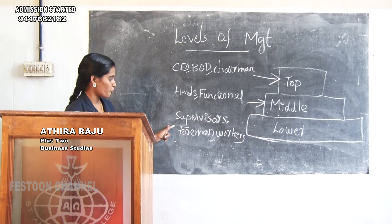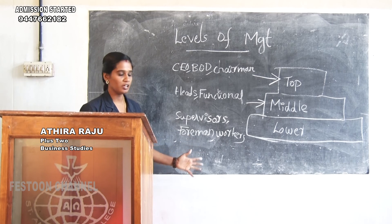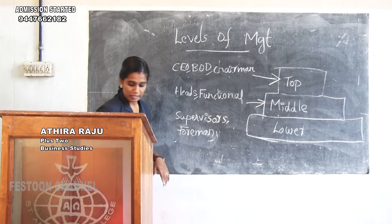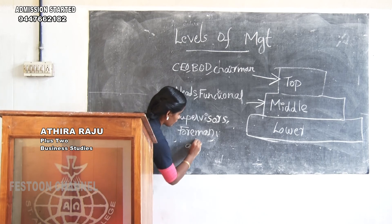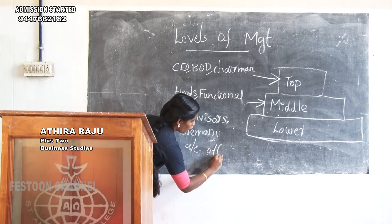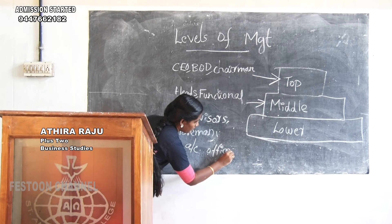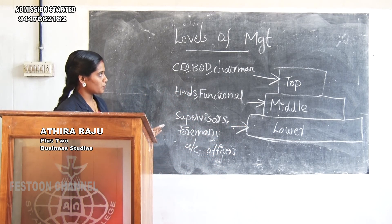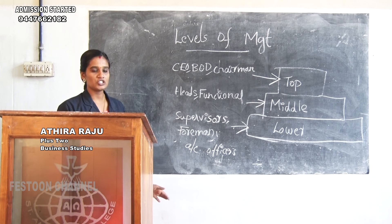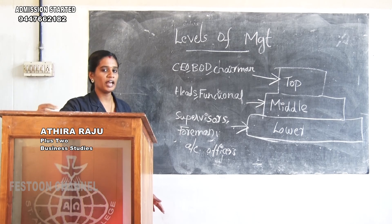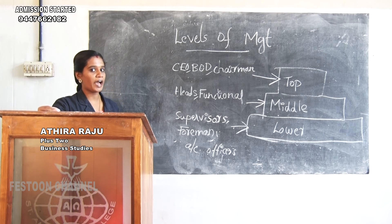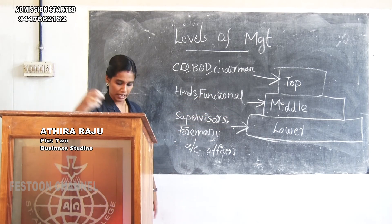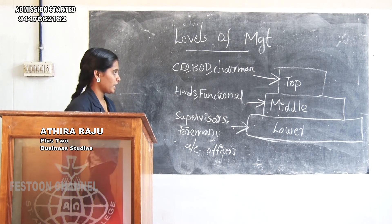Lastly, supervisors, foremen, workers, and account officers are included in lower level management. Levels of management include different organizations, human resources, and a hierarchy of representation — top level management, middle level management, and lower level management.